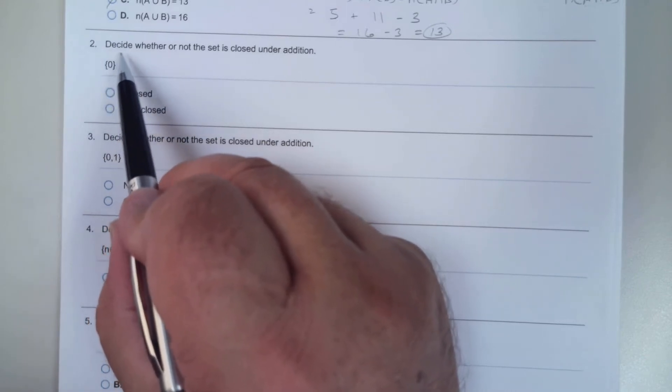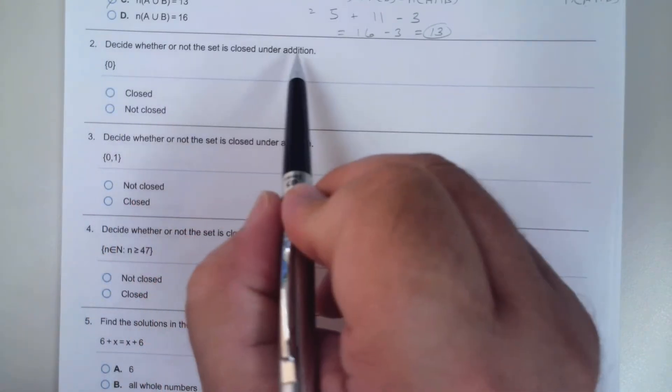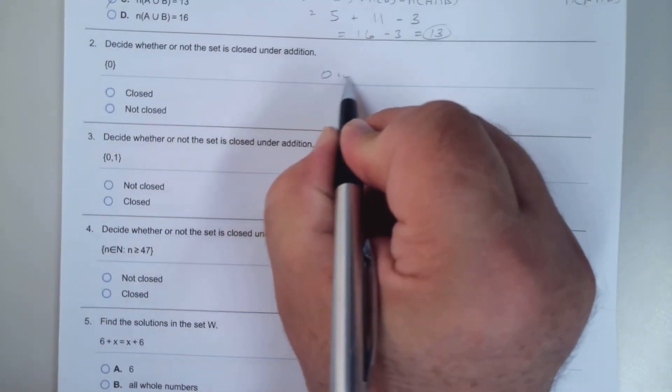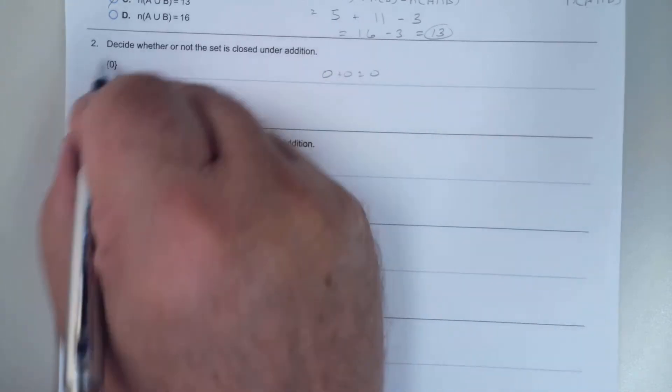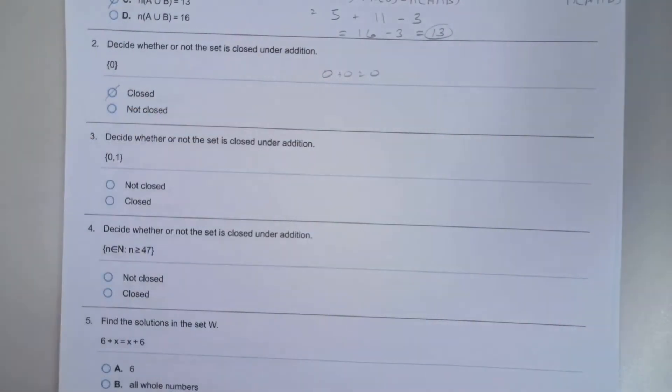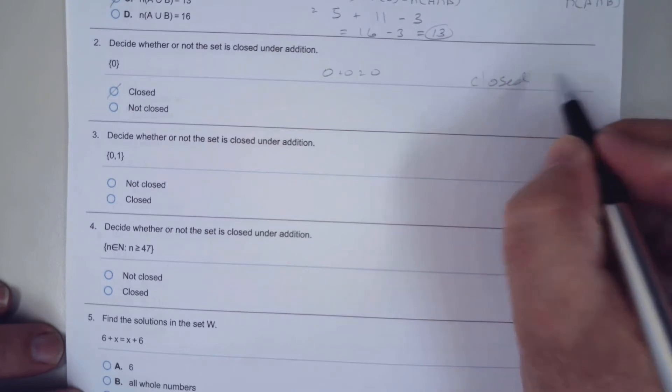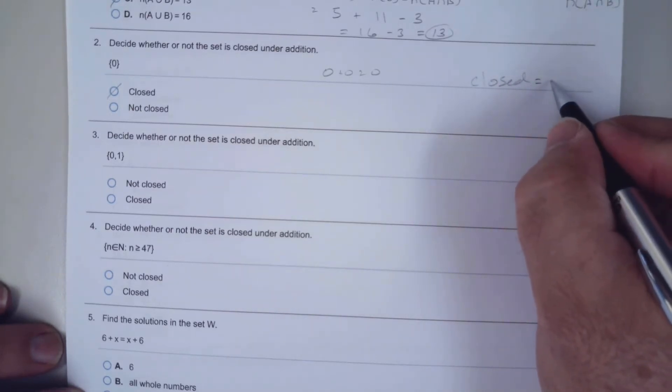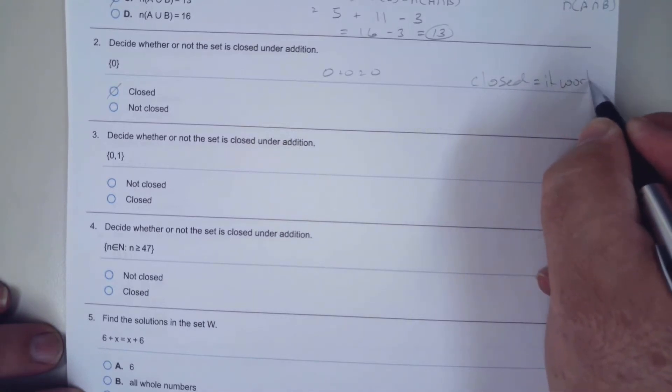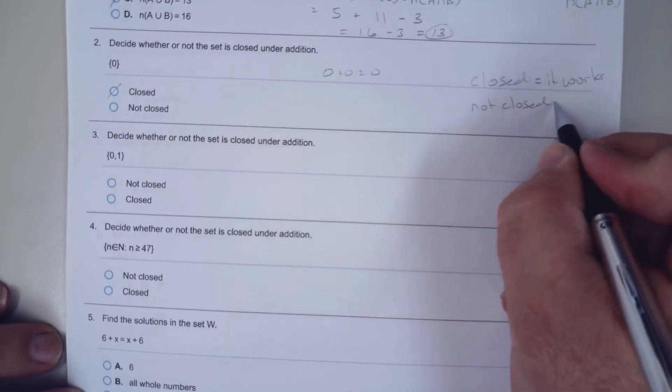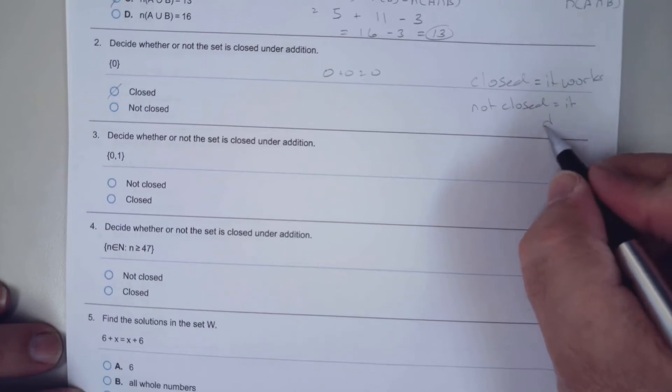Decide whether or not the set is closed under addition. If I take 0 plus 0, 0 plus 0 is 0, that's inside there, so it's closed. Closed means it works. Not closed means it doesn't work.